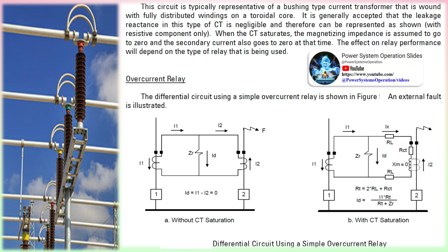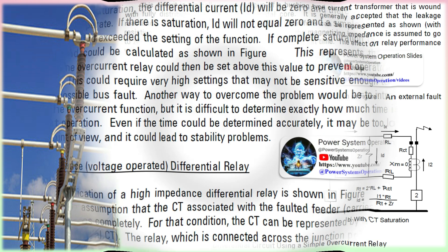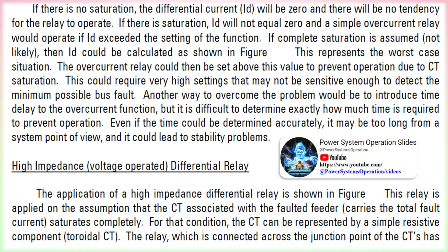CT saturation occurs when the flux required to produce the secondary current exceeds the saturation flux density of the core, as dictated by the physical dimensions of the CT. Whether or not any given current transformer will saturate is dependent on the following factors: CT ratio, core cross-sectional area, connected burden, magnitude of burden, presence and amount of remnant flux, amount and direction of DC offset in the current, and saturation flux density of the core steel. A typical case of CT saturation is for a fully offset current wave having a time constant of approximately 30 milliseconds.